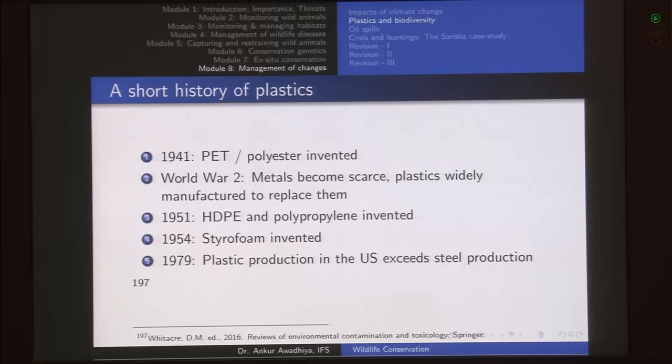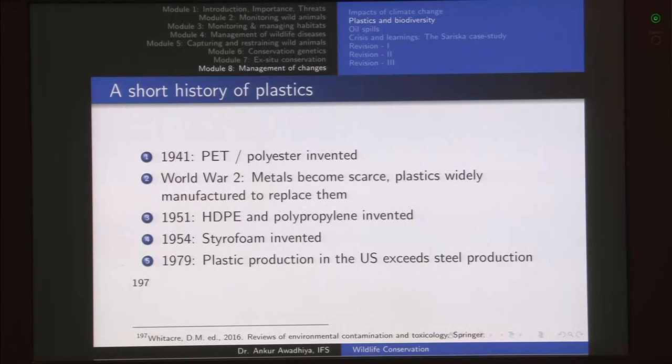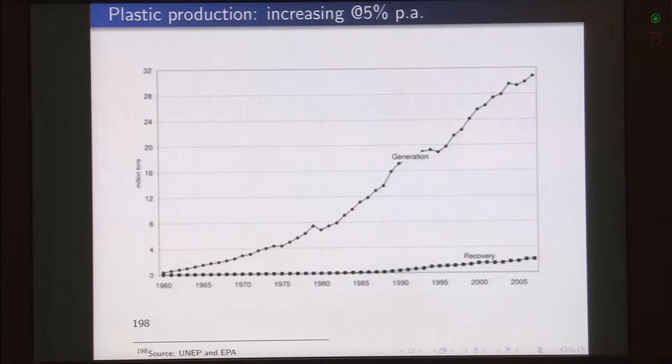During the Second World War, metals became scarce, so plastics were widely manufactured to replace them — we saw plastics coming even into vehicles and automobiles. In 1951, high density polyethylene and polypropylene were invented. In 1954, styrofoam was invented. So we can see that in most of the first half of the 20th century, it was the plastics age. By 1979, plastic production in the US exceeded steel production, and we have been producing plastics at an ever-increasing rate since then, growing at 5 percent per annum.